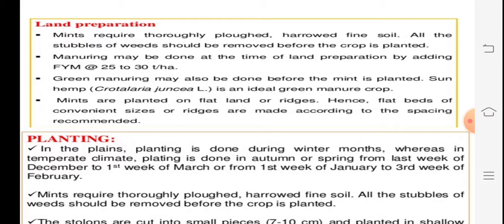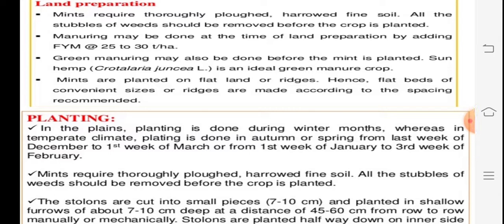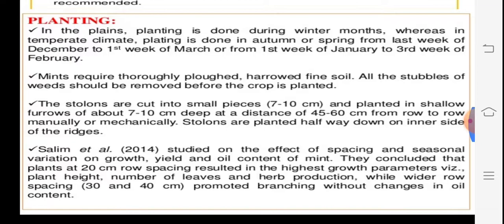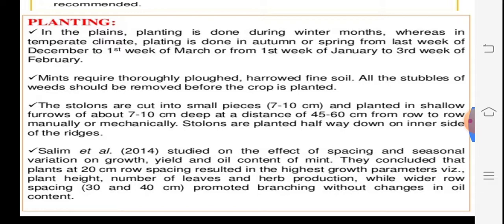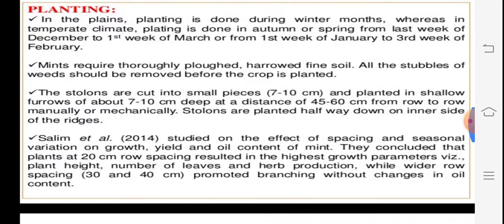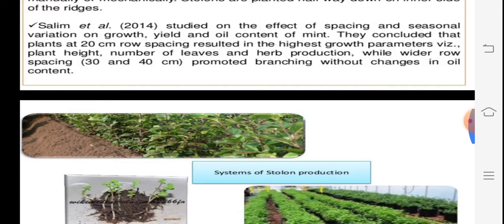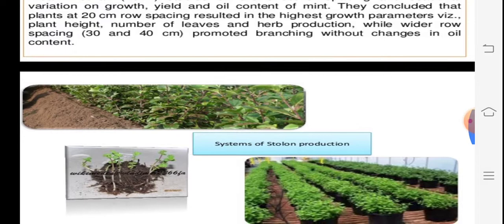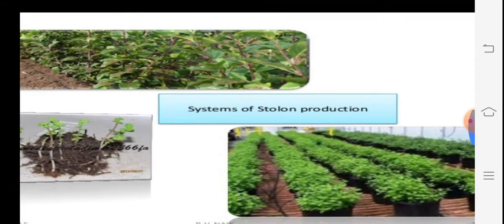Green manure is buried into the soil and provides support for two years. Plantation may be done on flat beds or on ridges and furrows similar to sugarcane cultivation. Planting is done from December to the first week of March. Stem pieces of 7–10 cm may be used. Studies by Saline et al. (2014) showed that spacing of 30–40 cm apart gives good production.